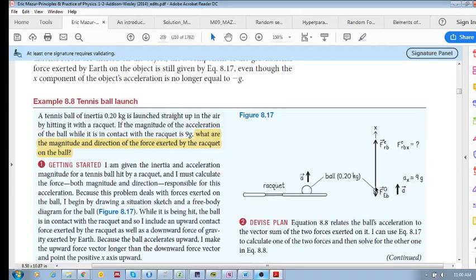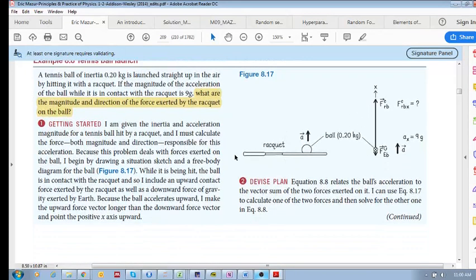As you can see, because it's accelerating up, we know that the vector sum has to be pointing upwards. So there's an upwards acceleration. So what is this force? This is what we're trying to calculate. So let's use our equation of motion.